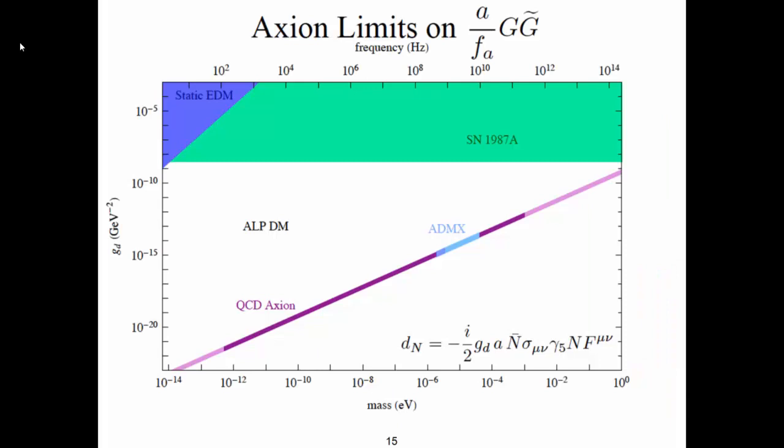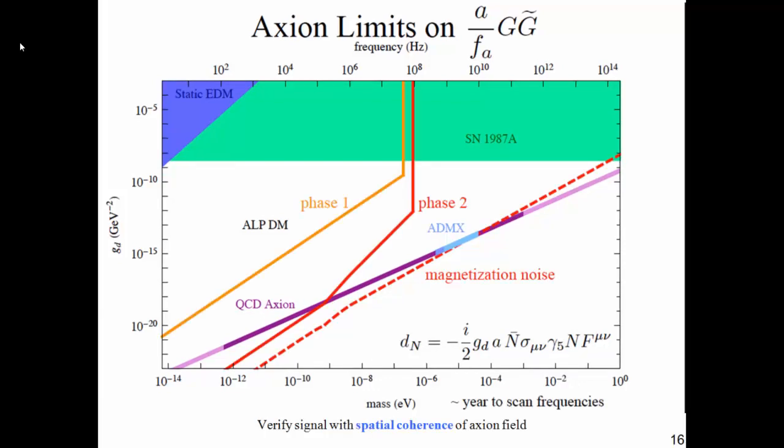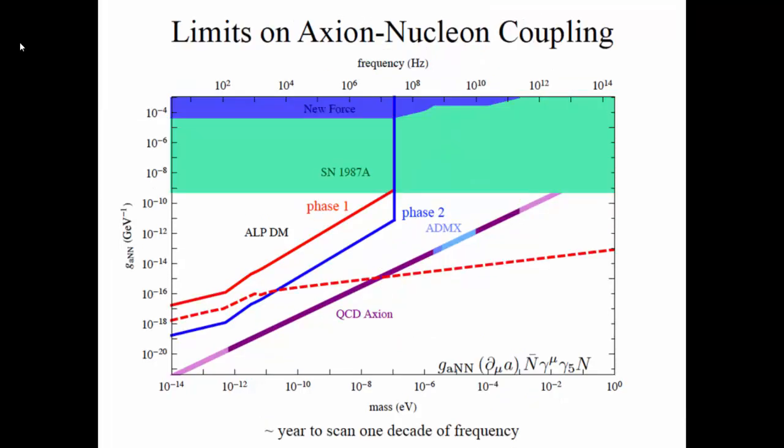Okay, so then maybe I'll quickly show you various exclusion plots. So this is, again, the mass of the axion, and this is now the coupling that leads to these electric dipole moments. And this is the QCD axion. These are some exclusions that already exist from static electric dipole moment experiments and supernova, and this is a fundamental magnetization shot noise limit. And these are the stages of the experiment—CASPER electric experiment—as we foresee them for the next few years. And we hope to reach this QCD axion line in the second stage.